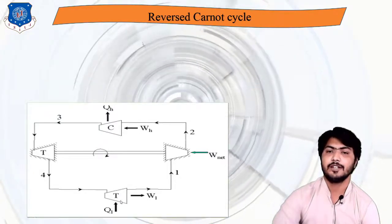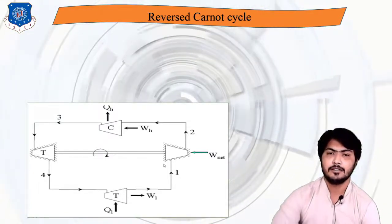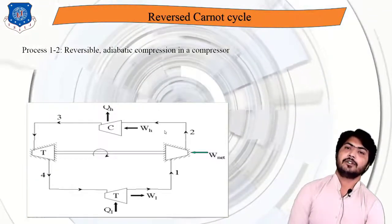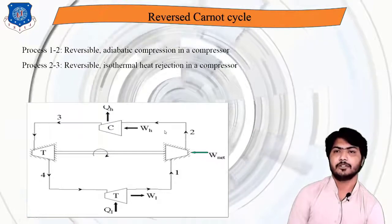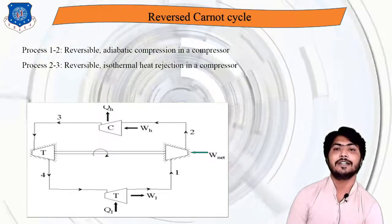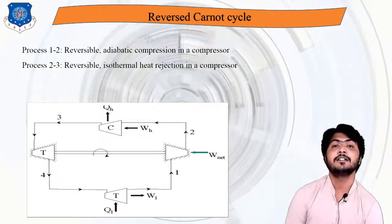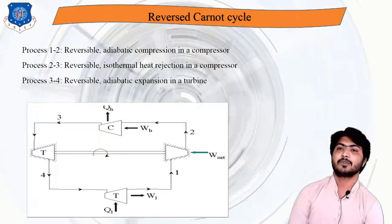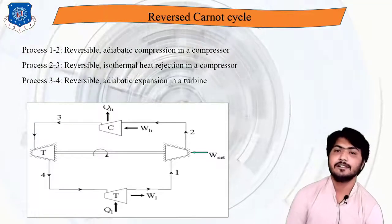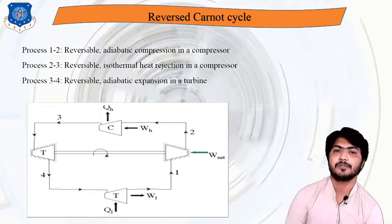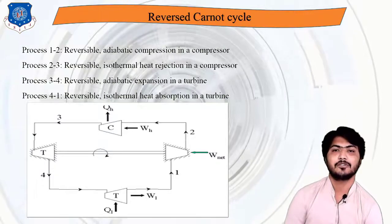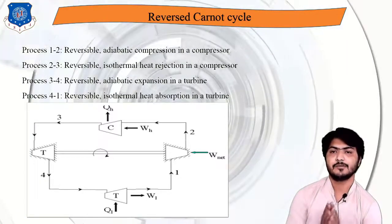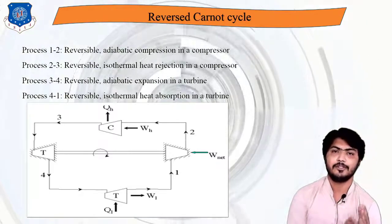To summarize the four processes: 1 to 2 is reversible adiabatic compression in the compressor; 2 to 3 is reversible isothermal heat rejection in the compressor; 3 to 4 is reversible adiabatic expansion in the turbine; and 4 to 1 is reversible isothermal heat absorption in the turbine. This whole process makes the reverse Carnot cycle.